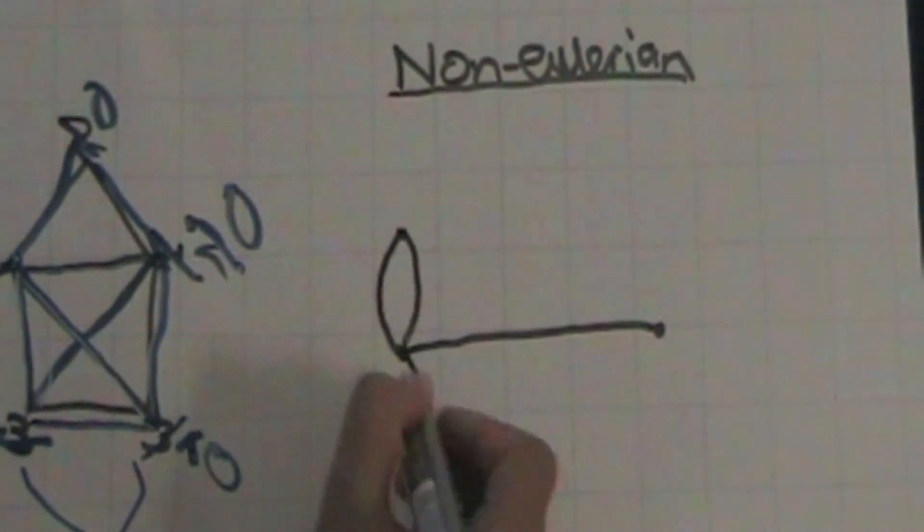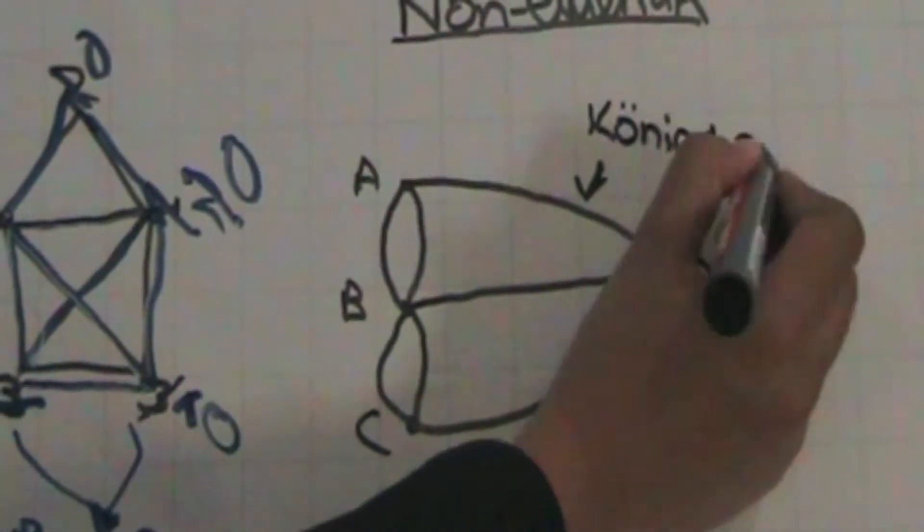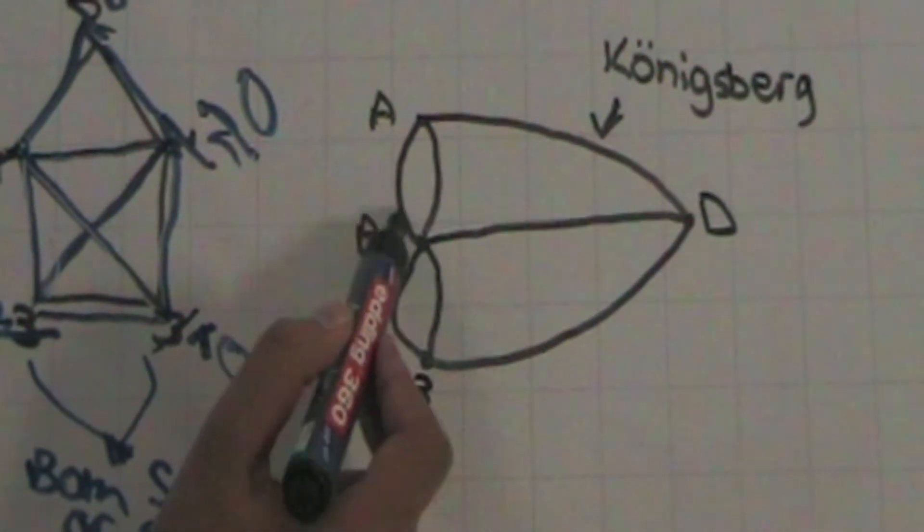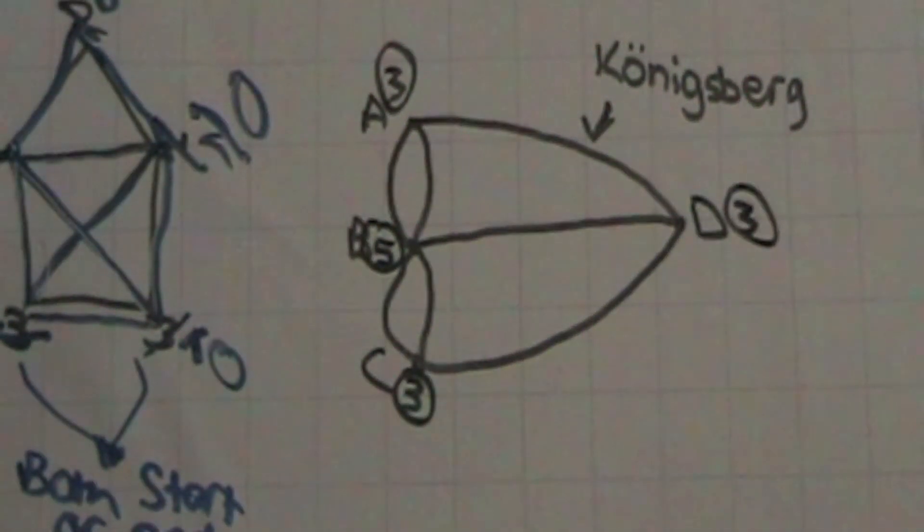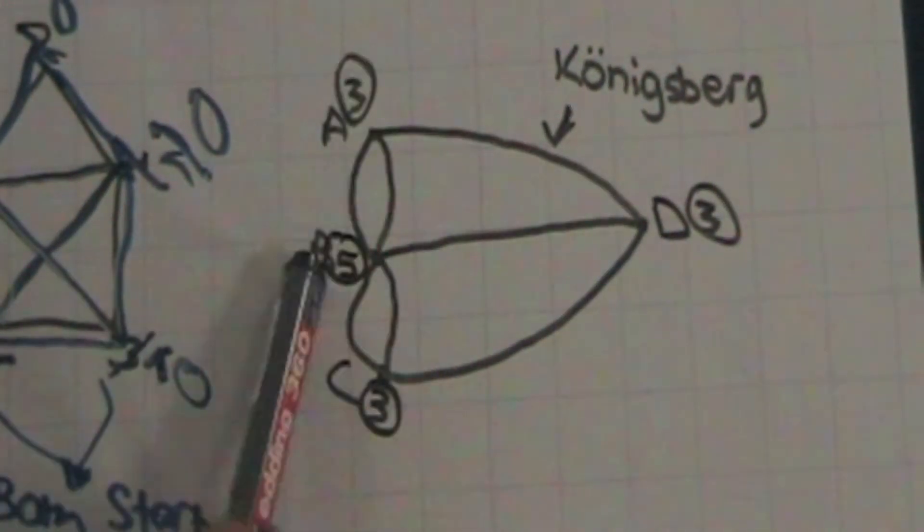Like we said previously, the bridges of Königsberg is non-Eulerian. But why? Let's look at the order of the vertices. We get three, five, three, and three. There are too many odd vertices.